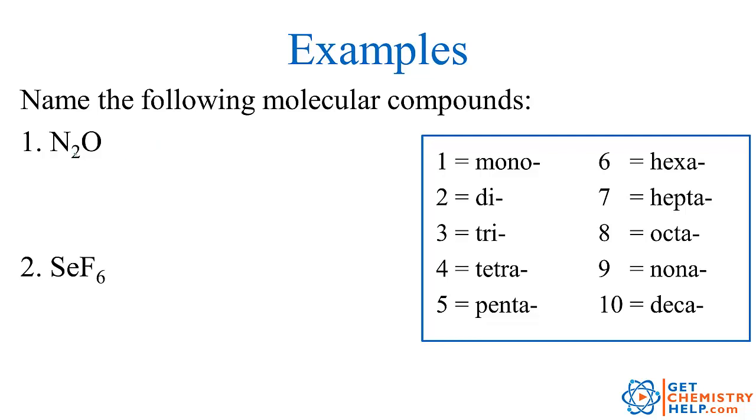So N2O. So two nitrogens. Two is di. So I'm going to write dinitrogen. One oxygen. So mono oxide. But again, we don't say mono oxide. We drop that extra vowel there and just say monoxide.